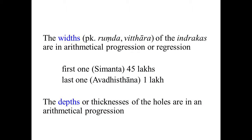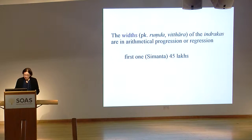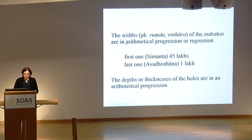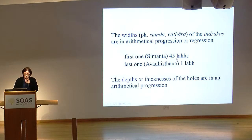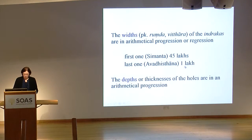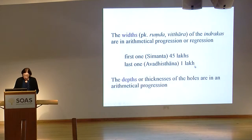Not only does the number of holes follow arithmetic progressions, but also the width of the Indrakas and the depth of the holes are in arithmetical progression. For the width, the first one on top is 45 lakhs, which is exactly the same as the size of the Adhai-dvipa — the human world, the two and a half continents. The last one, which is the lowest, is 1 lakh, which is exactly the size of the Jambudvipa. So these are not mere coincidences.